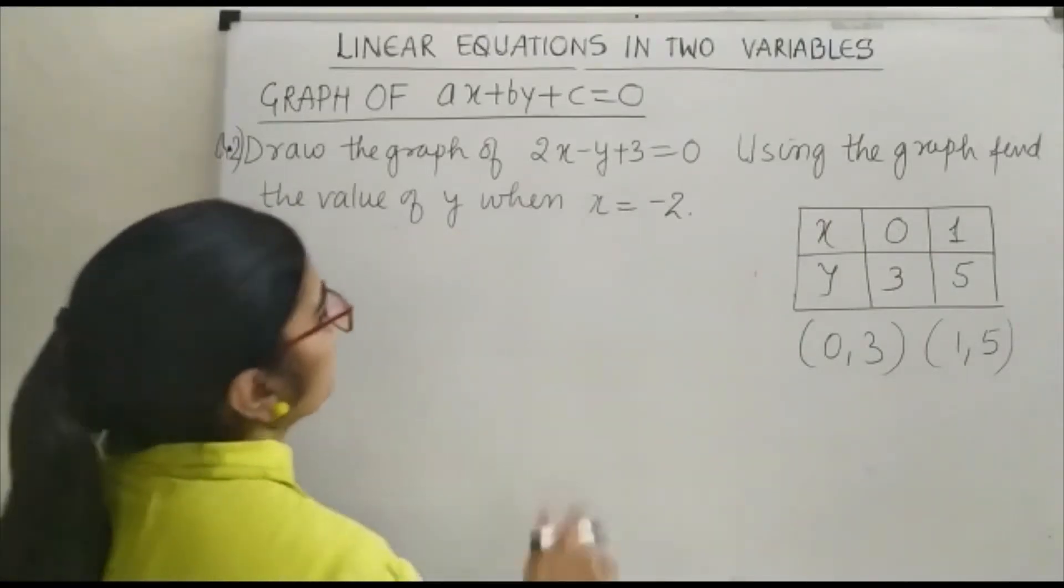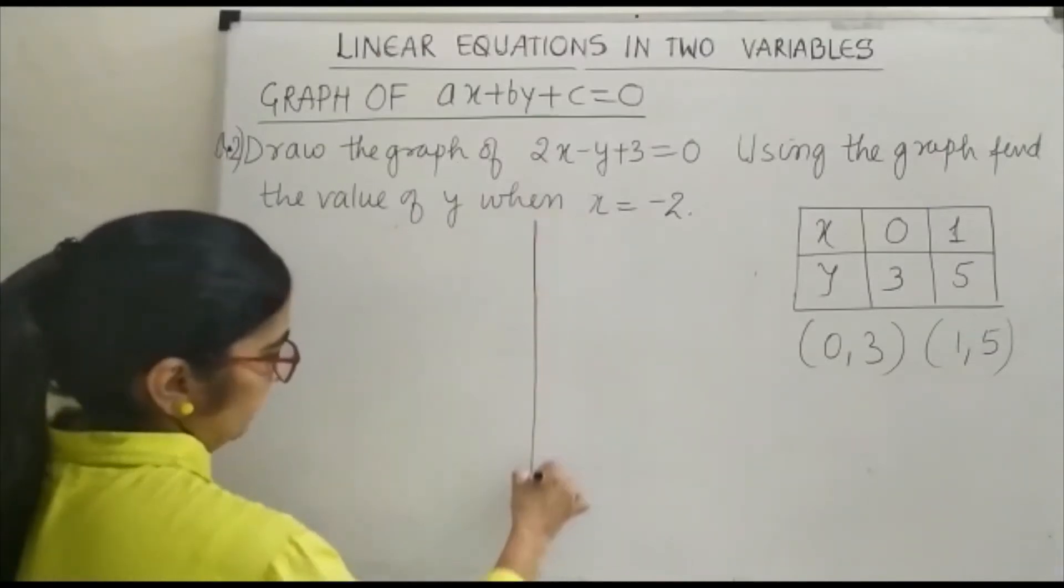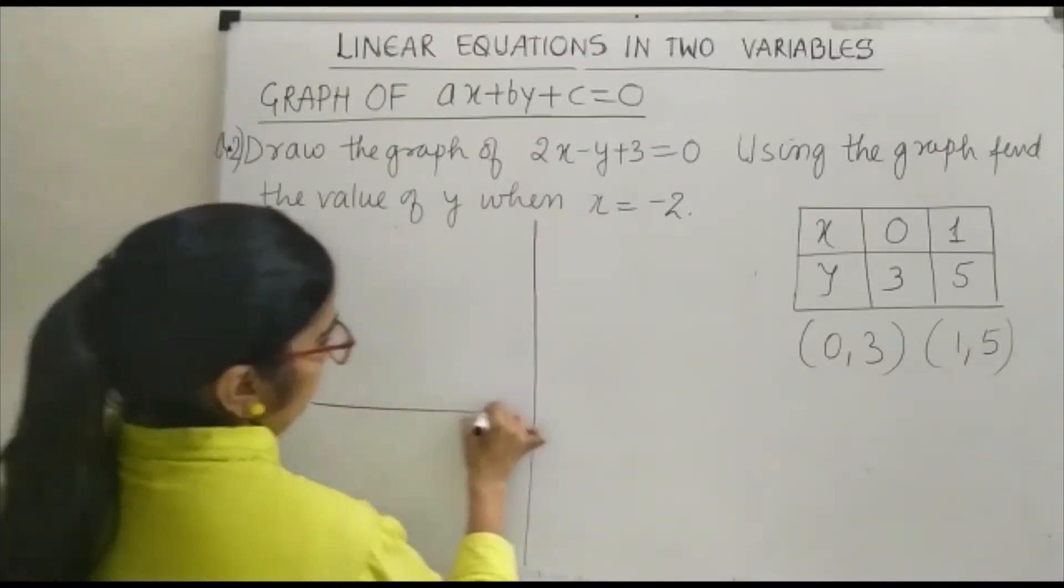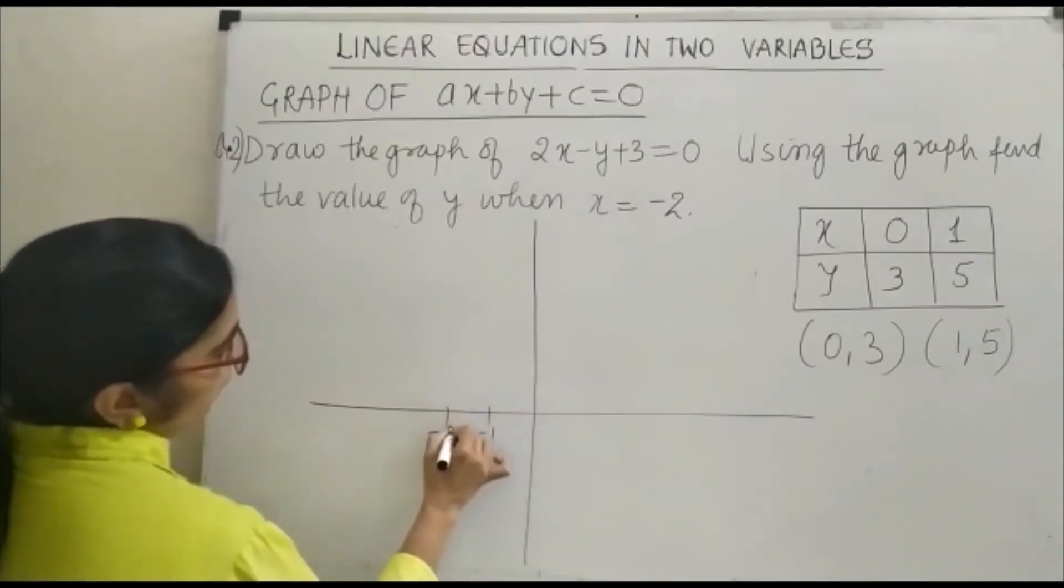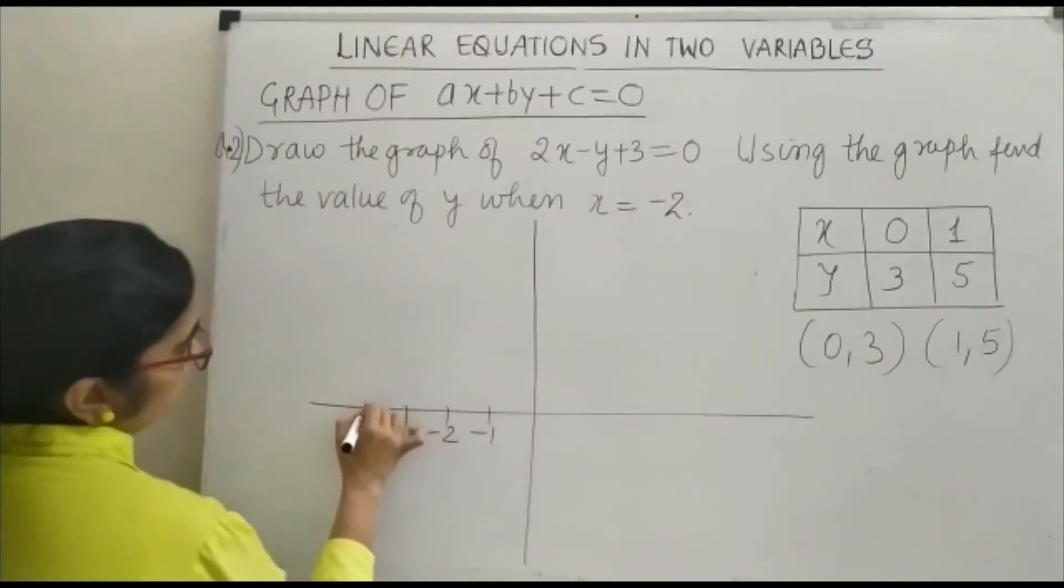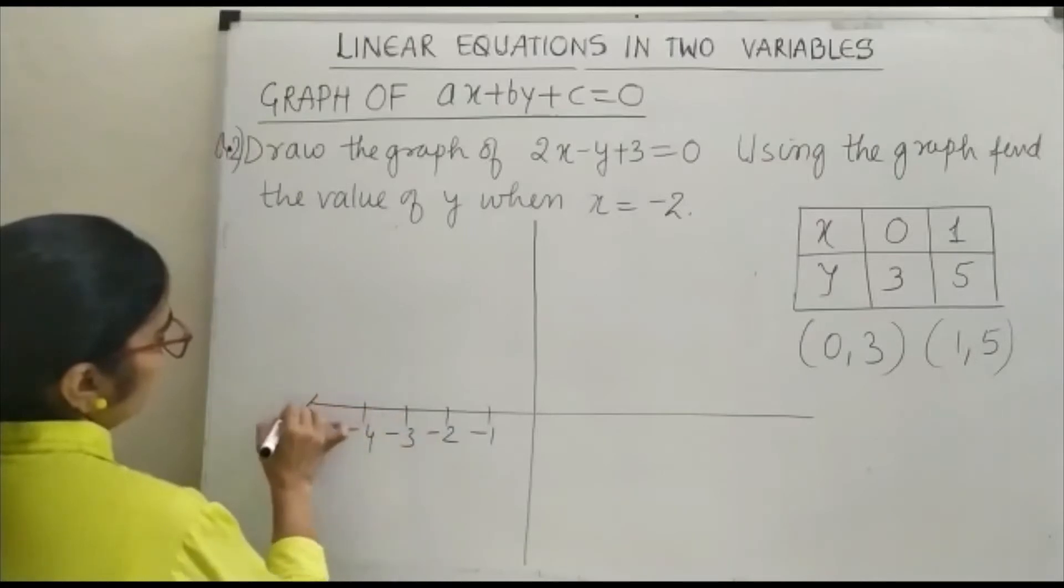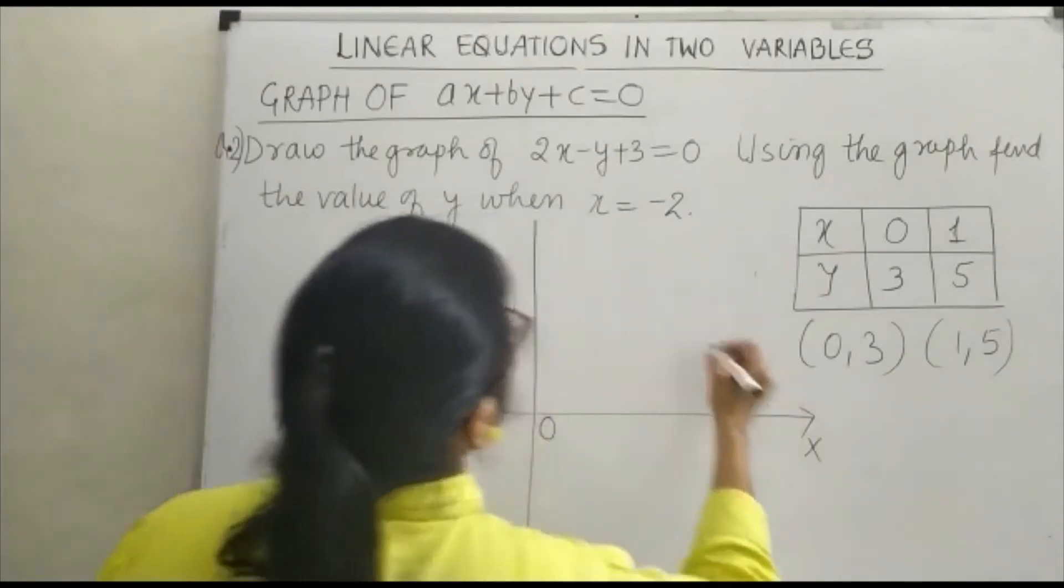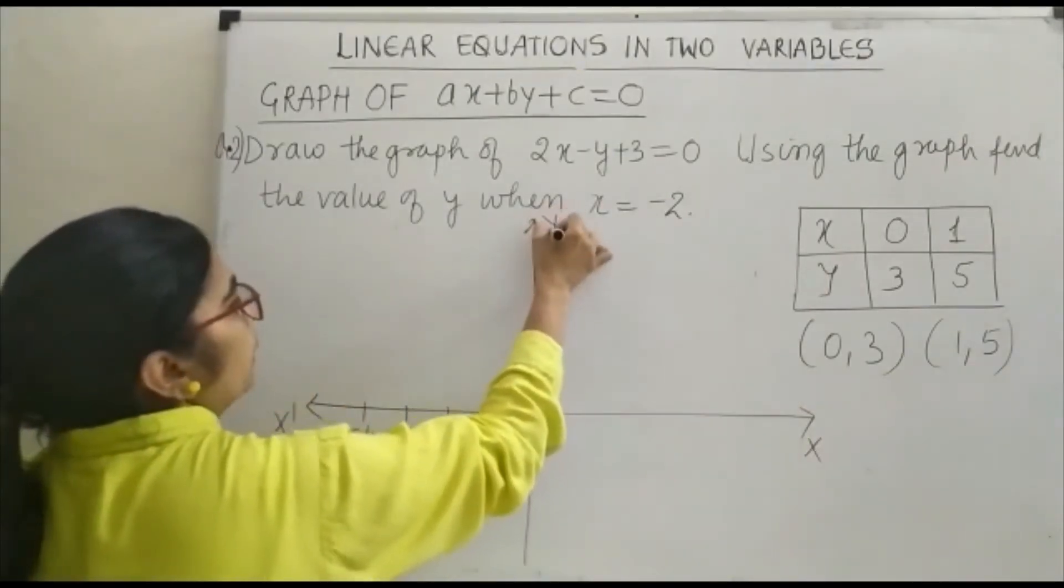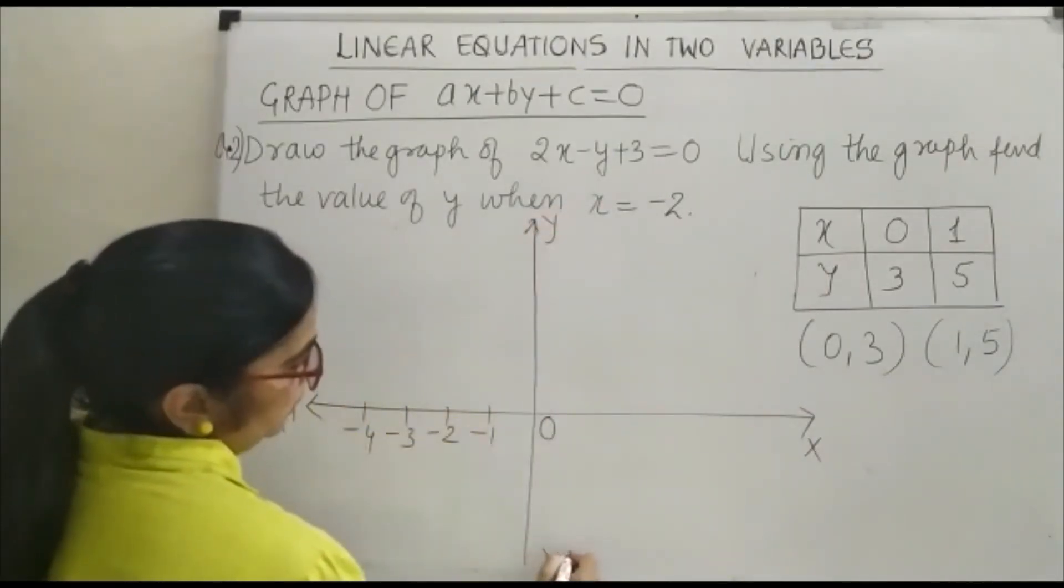This is minus 1, minus 2, minus 3, minus 4. This is your origin. This is your x-axis. This is your y-axis and this is your y-dash.